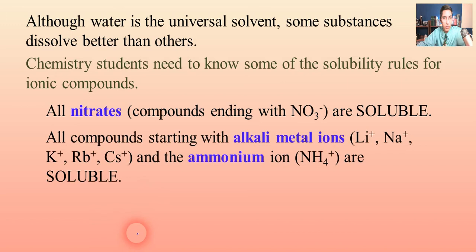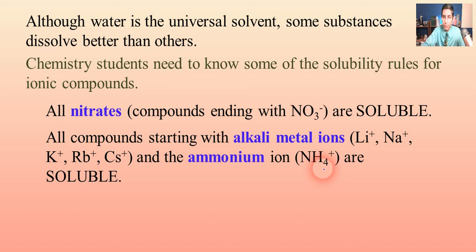Here's another one that's just as important: all compounds that start with an alkali metal ion — lithium, sodium, potassium, rubidium, cesium — as well as the ammonium ion (NH4+) are soluble. You can't get through writing net ionic equations if you don't know those two solubility rules. Those are the most fundamental. Anything with an alkali metal or ammonium at the front will dissolve in water.